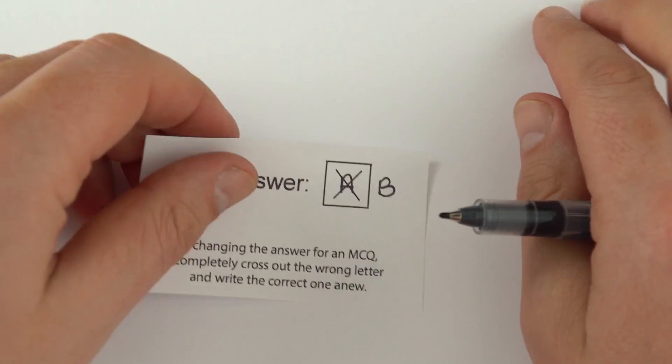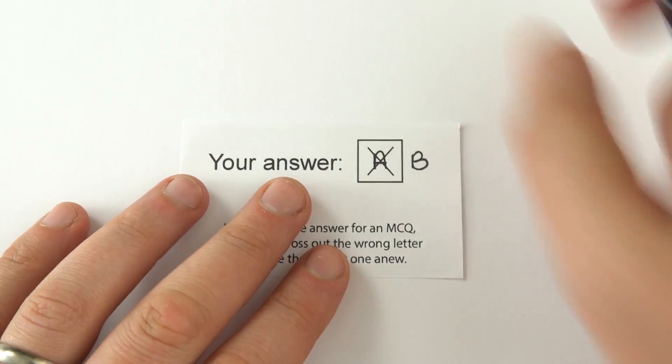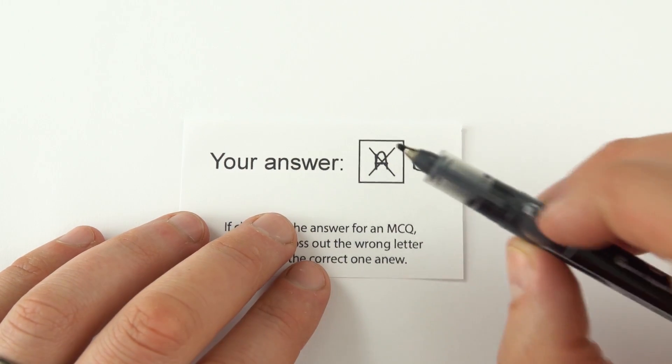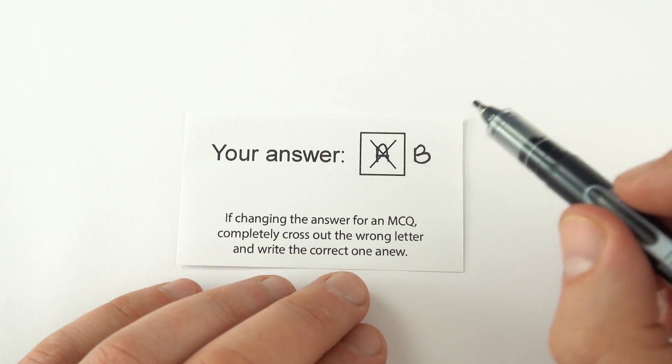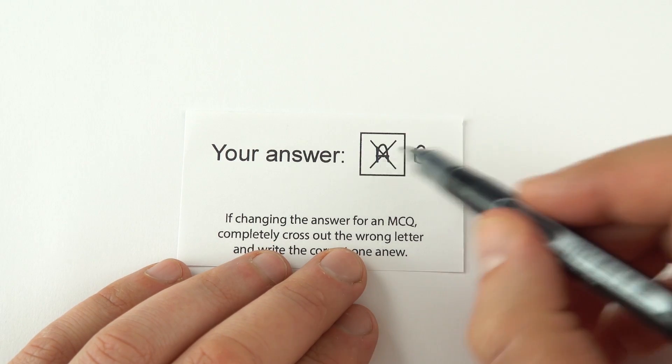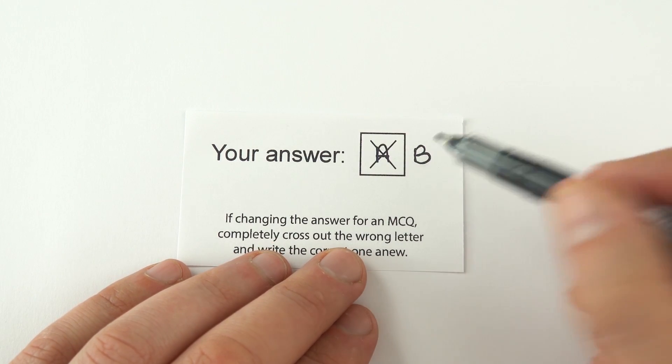If you've got any multiple choice questions, which a lot of exam papers do, it often says on the front of the exam booklet what you should do if you make a mistake. For OCR, if you just cross it out and put the right answer by the side, that is good enough.